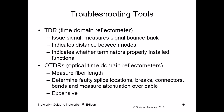The TDR (Time Domain Reflectometer) is specifically for copper cables — it issues a signal and measures the bounce-back to indicate distance between nodes and whether terminators are properly installed. The OTDR (Optical TDR) is for fiber — it measures fiber length and verifies splice quality. Both the TDR and OTDR are important for Network+ exams. These tools are expensive.